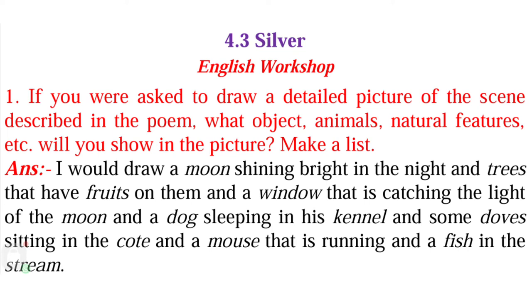Now we will start the English workshop questions. The first question is: if you were asked to draw a detailed picture of the scenes described in the poem, what objects, animals, natural features, etc. will you show in the picture? I would draw a moon shining bright in the night, trees that have fruits on them, a window catching the light of the moon, a dog sleeping in his kennel, some doves sitting in the court, a mouse that is running, and a fish in the stream.